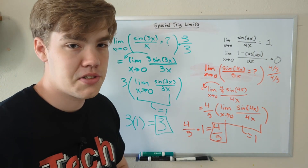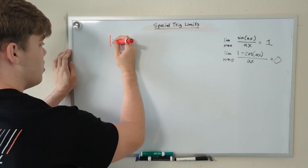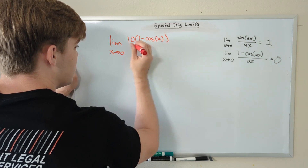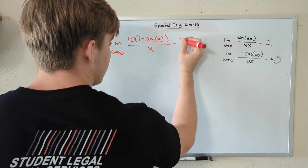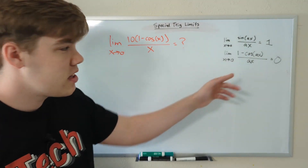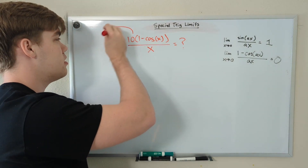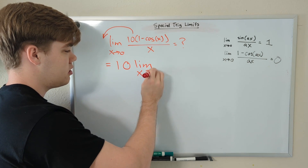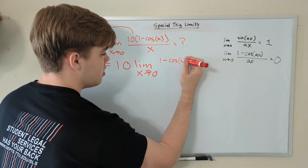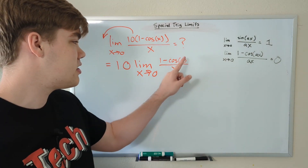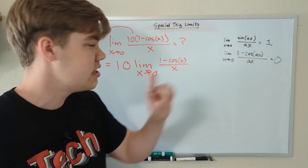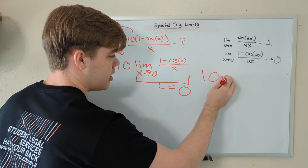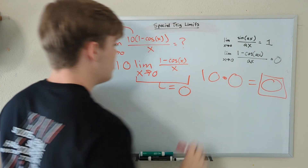Now let's do one example using the cosine version of our special trig limit. We have the limit as x approaches zero of 10 times one minus cosine(x) divided by x. We're almost in the target form — we just have the 10 in front, and we can pull this constant to the front of our limit. This gives us 10 times the limit as x approaches zero of one minus cosine(x) divided by x. The x inside cosine and the x on the bottom are the same, satisfying our condition, so this limit equals zero. Our function is just 10 times zero, which equals zero.